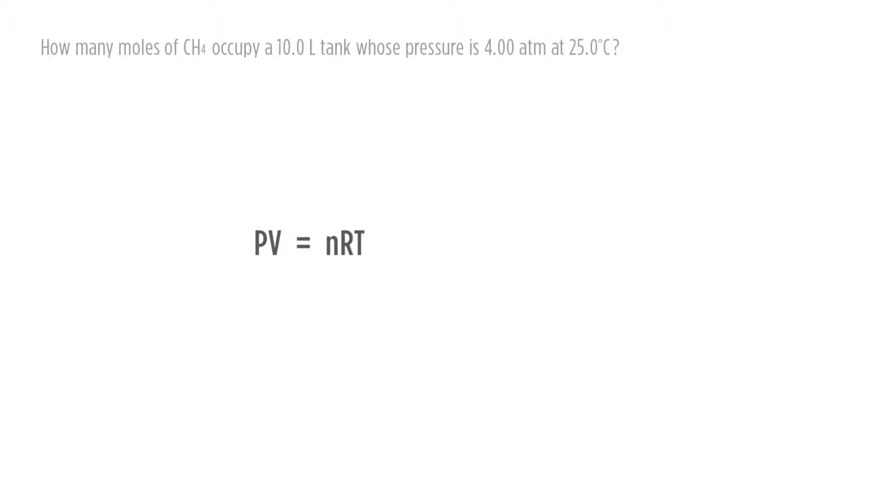Again, like we did before, we need to look at our formula, reformulate it to get moles by itself, so we're going to want to isolate n. The first thing we're going to do is divide by RT. If we divide by RT, we will cancel out R and T on one side. That's going to give us PV over RT equals n.